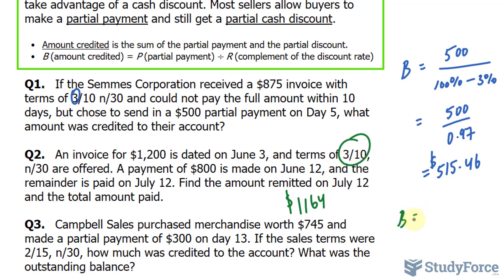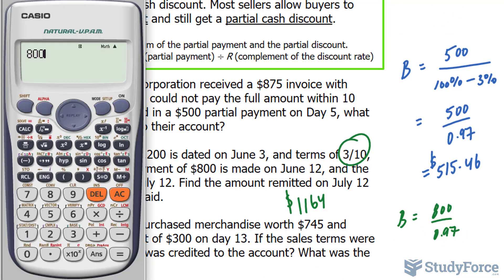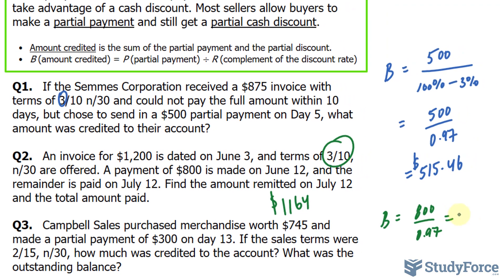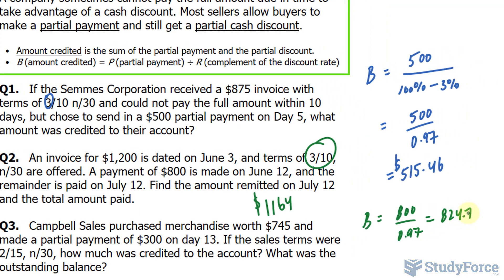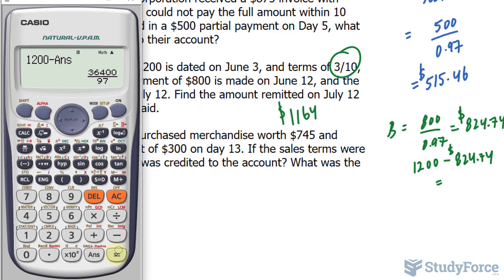So we take $800 and divide it by the complement of the discount rate, which is 97% or 0.97. The amount credited is therefore $824.74. Subtracting that from the total invoice: $1,200 minus $824.74 gives us the outstanding balance of $375.25 — that is the amount they have left to pay.